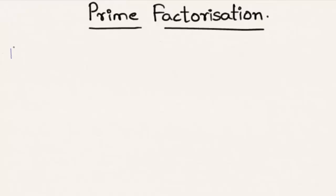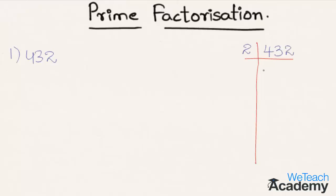So let us consider a number. The number is 432 and let us simplify by using factorization. 432 is nothing but 2 times 216.